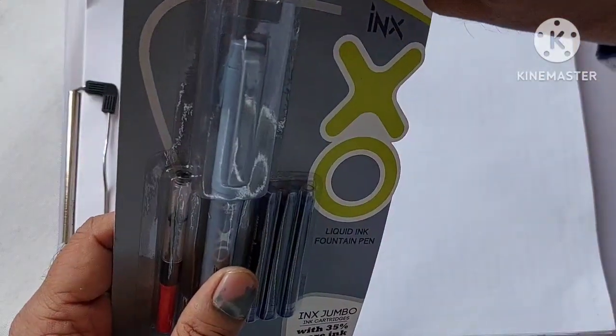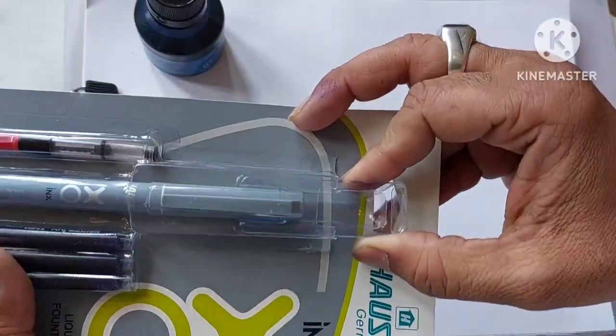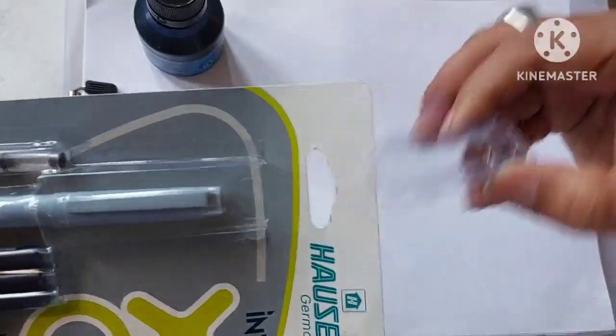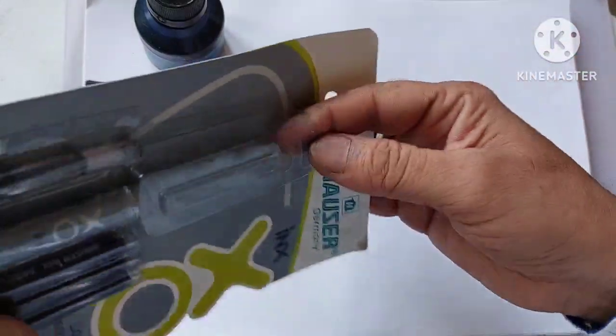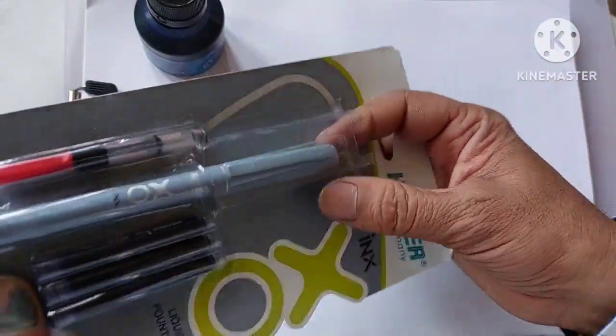We can just open the pen by removing this part over here. It just slides out and the pen comes out. So let's open the pen and see now how this pen looks like.